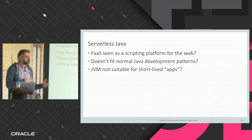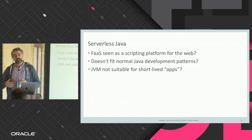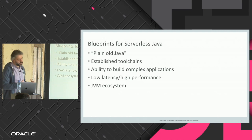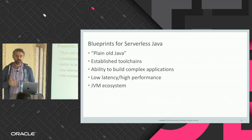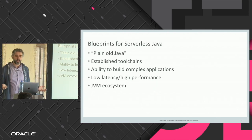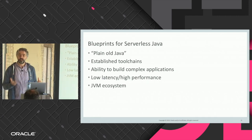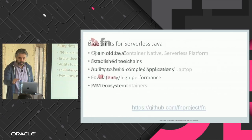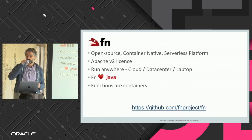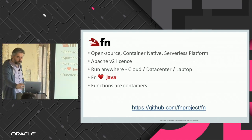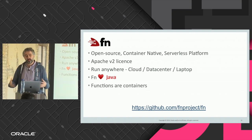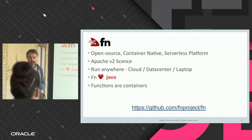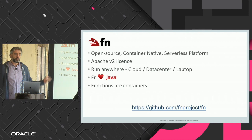When Oracle started working on our serverless offering, we set the goal of making Java viable for serverless functions. We defined blueprints: plain Java, the ability to use established toolchains, the ability to build complex applications, low latency and high performance, and support for the rich JVM ecosystem. To illustrate this, I'm going to discuss FN, an open source FaaS platform. Oracle is an important contributor, and FN is used under Oracle Function, our FaaS platform announced recently.